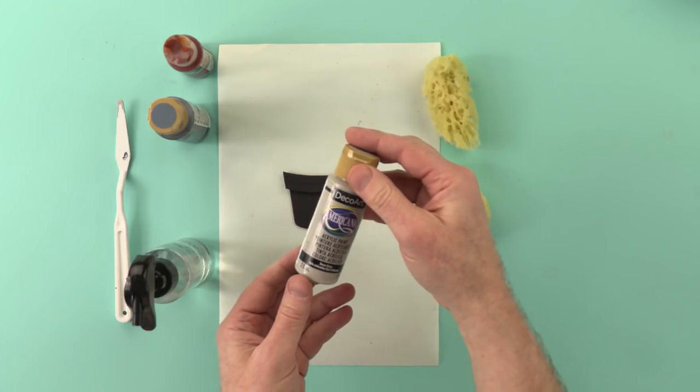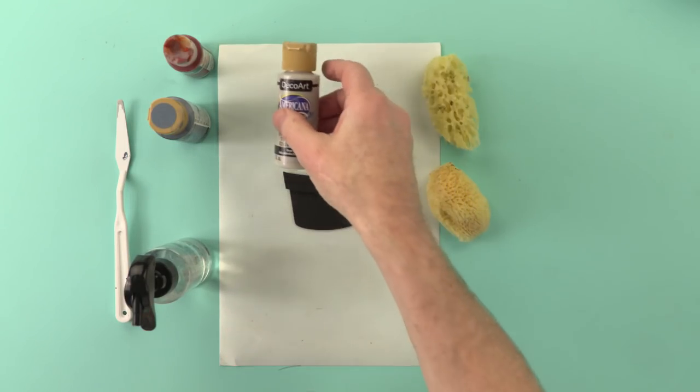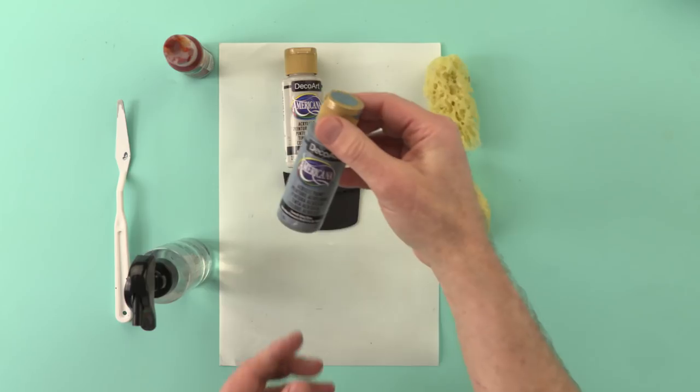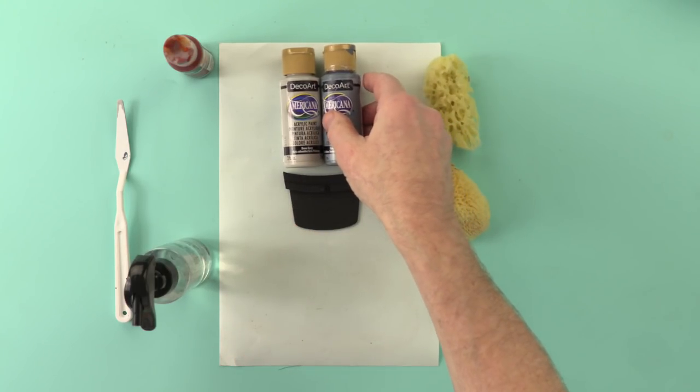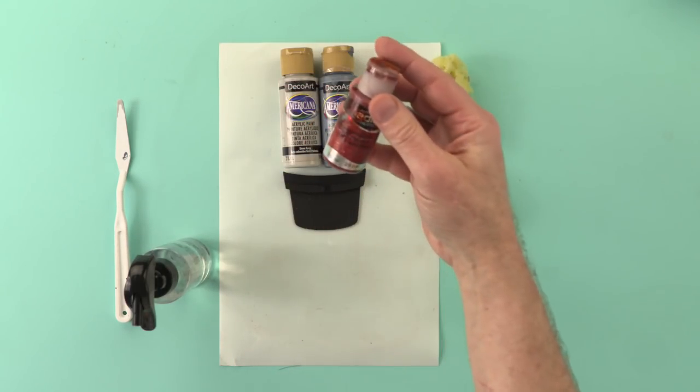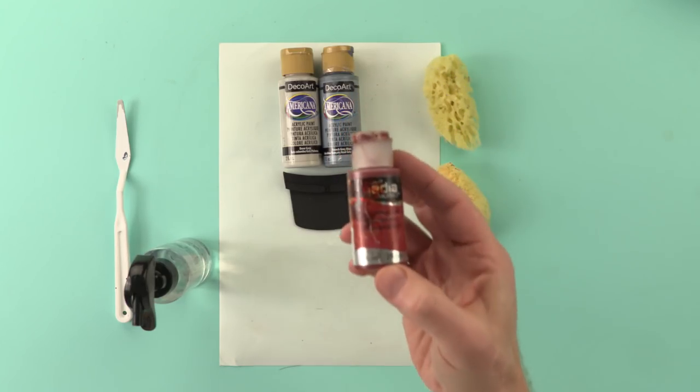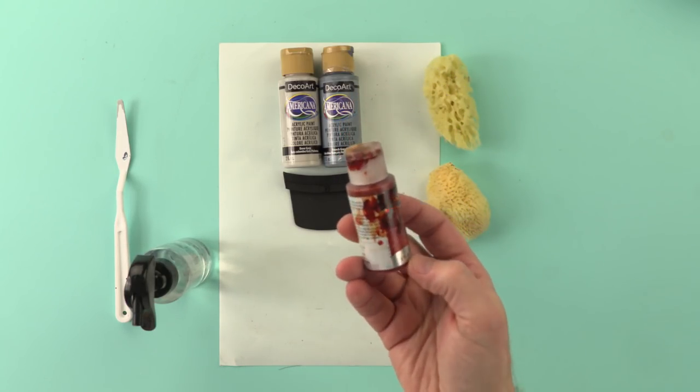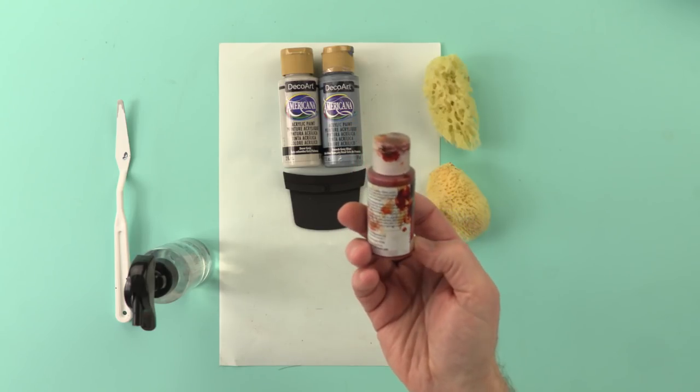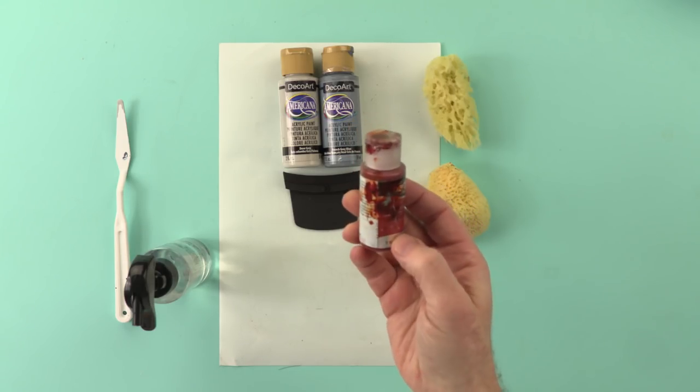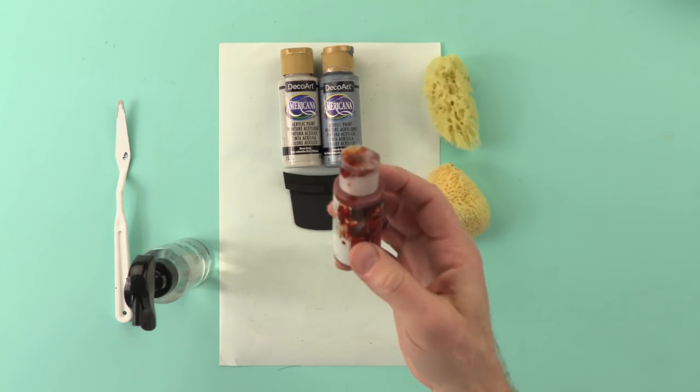We've got Dove Grey Americana, French Grey Blue Americana by DecoArt, and we've also got Quinacridone Gold. Those of you who've watched my vlogs before are probably familiar with this wonderful color. Great for applying rust and stains.